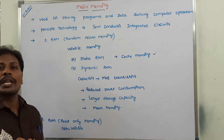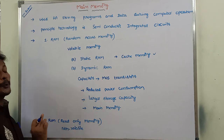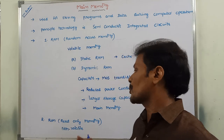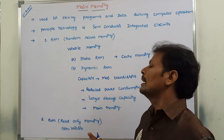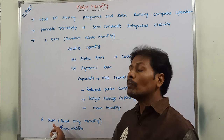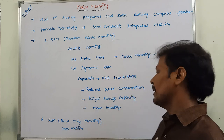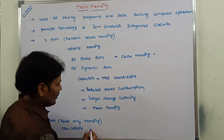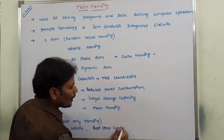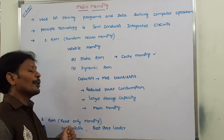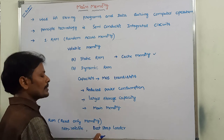Once the manufacturing of the ROM chip is completed, it is not possible to change the programs stored in the ROM. Once the programs are stored in the ROM, they cannot be changed once chip manufacturing is completed. Because of that reason, ROM stores the programs permanently. ROM is mainly used for storing an initial program called as bootstrap loader.